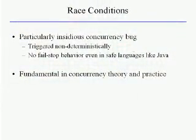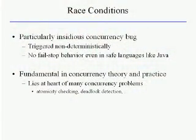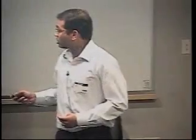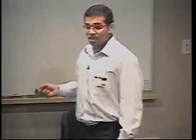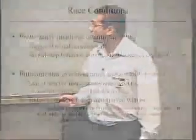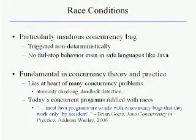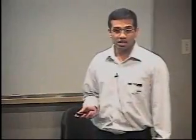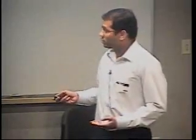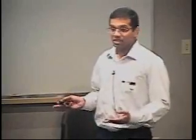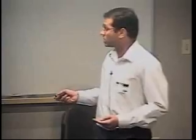Races are fundamental in both concurrency theory and practice. Many researchers have shown that atomicity checking can be reduced to race detection, and static deadlock detection done precisely also needs a good static race detector. There's also practical value: a recent book on Java concurrency states that most Java programs today are so rife with concurrency bugs that they work only by accident. This problem will get more severe as multi-core CPUs become more ubiquitous, with more concurrent programs and more thread schedules being exercised, exposing race conditions.